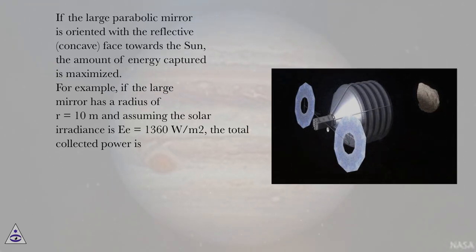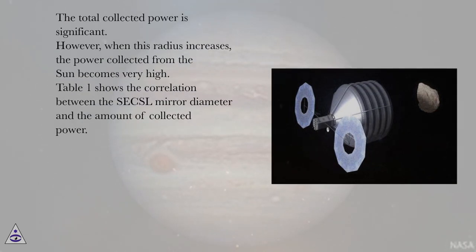For example, if the large mirror has a radius of R = 10 meters and assuming the solar irradiance is E = 1360 W/m², the total collected power is significant. However, when this radius increases, the power collected from the sun becomes very high.